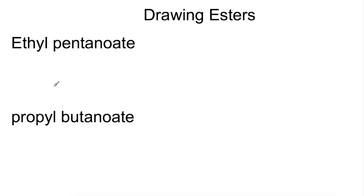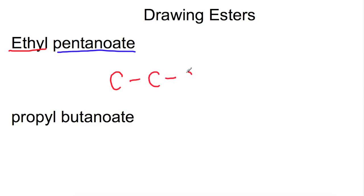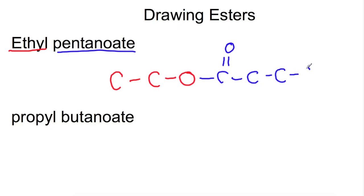You should be able to draw esters just from their name. For ethyl pentanoate, the name tells us the alcohol part had two carbons and the carboxylic acid had five. Drawing in two colours: the alcohol part gives carbons one, two, then an oxygen. The ester link connects to the C=O of the carboxylic acid, which had five carbons — one is already there, so we add two, three, four, five.